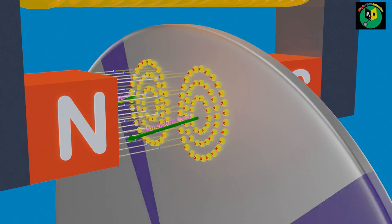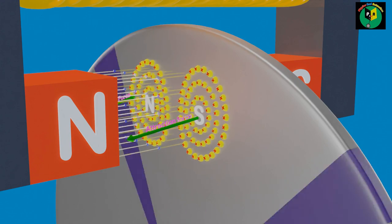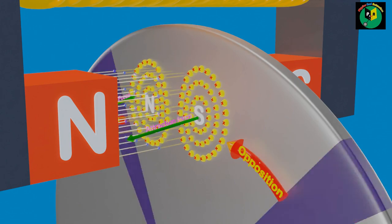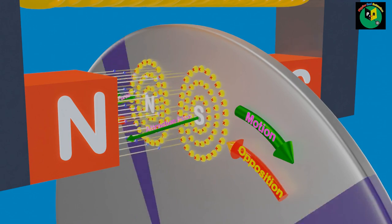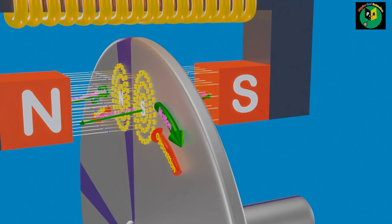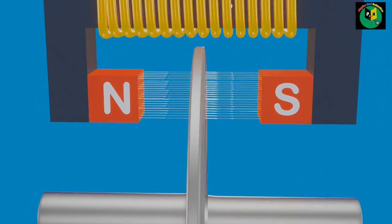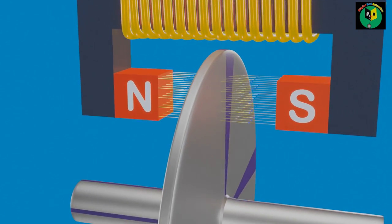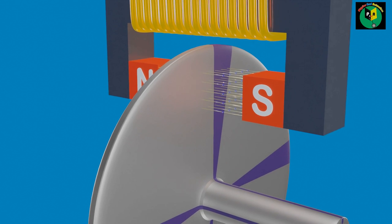In this way, the combined effect of all the Eddy Currents induced opposes the rotating motion of the disk and forces it to stop rotating. That is how Eddy Current helps us to achieve effective non-contact braking.